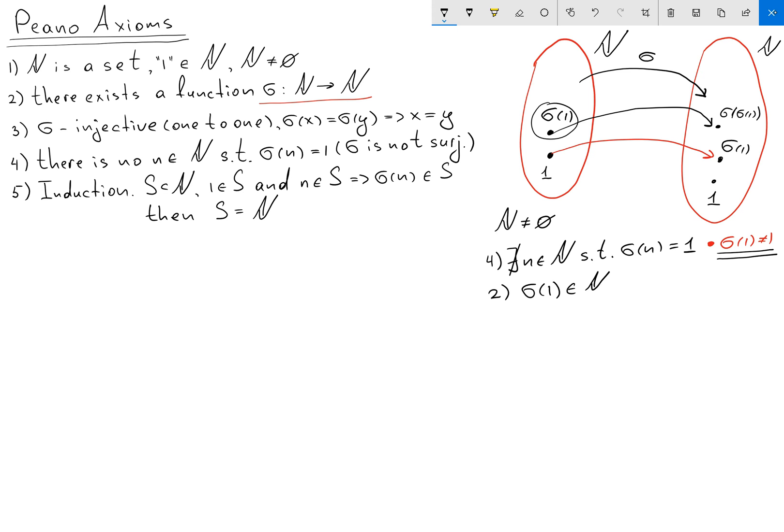You can see that sigma sigma of 1. What we want to show is that sigma sigma of 1 doesn't equal sigma of 1. So far we have three elements in our set. It's obvious that sigma sigma of 1 doesn't equal 1. Why? Because of axiom number 4.